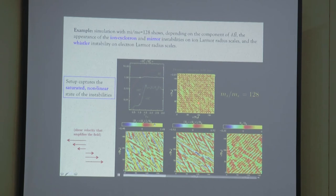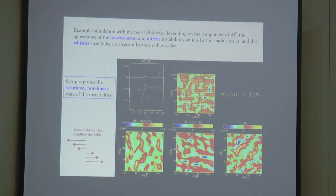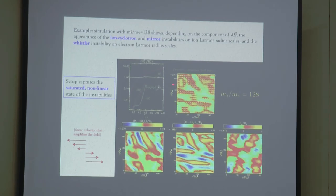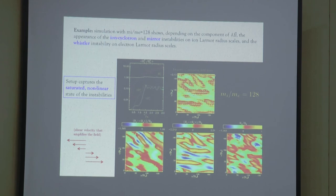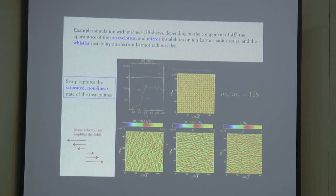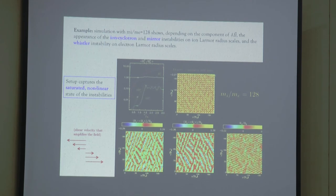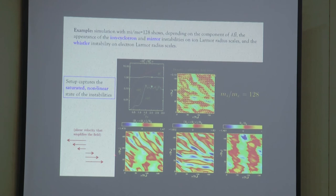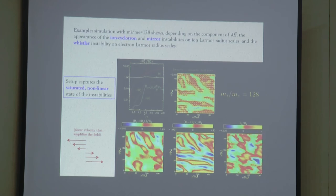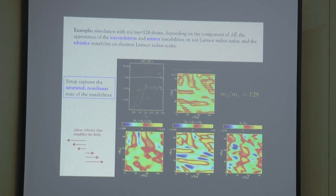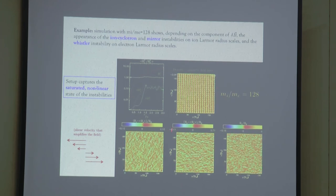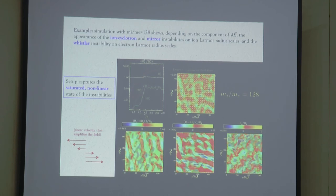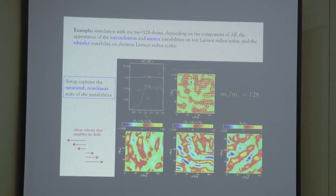The magnetic field no longer points vertically — it kind of goes sideways. You can see the formation of different patterns corresponding to the different instabilities that appear, which correspond to the ion cyclotron and the mirror instabilities.